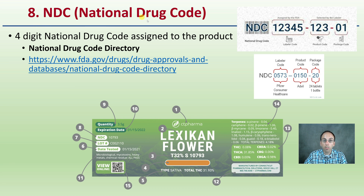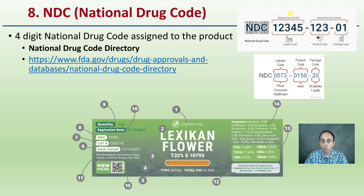Then we get into number eight — the NDC, or National Drug Code. A four-digit National Drug Code is assigned to the product. Here's a link if you want the directory, and the NDC number is given right here. That National Drug Code applies to a variety of other products as well — not just cannabis. For example, 0150 is the product code for Advil. It's a nice way to have standardization, and it's all part of the required labeling process.